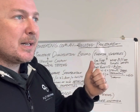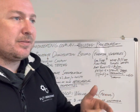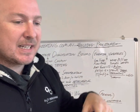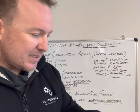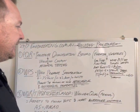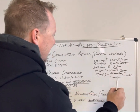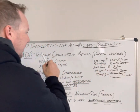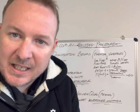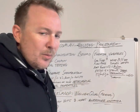Then they send it off for testing. If the yield strength is right, if the toughness is right, if the macro is right and it gets the right penetration, it passes. That's effectively what you want to get out of your PQR — you want to know that you've achieved the required mechanical properties.